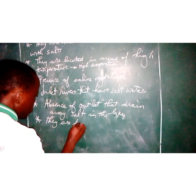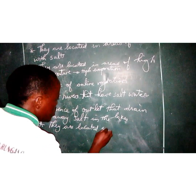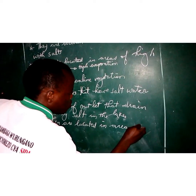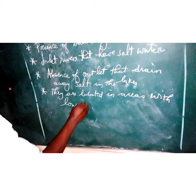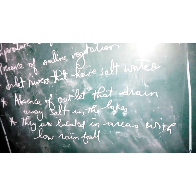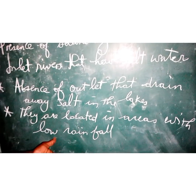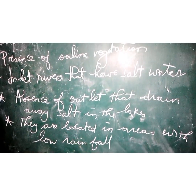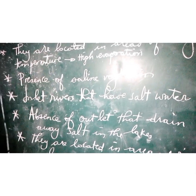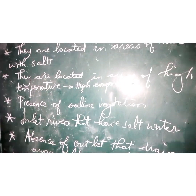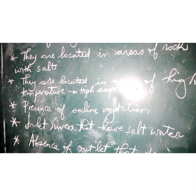We have also another point: they are located in areas with low rainfall. Remember, if we have heavy rainfall it can produce water which can reduce the salt content in those lakes, but most of the rift valley lakes are located in areas with low rainfall, and this causes inadequate water to dilute the salts in the lakes, causing those lakes to have salt water.